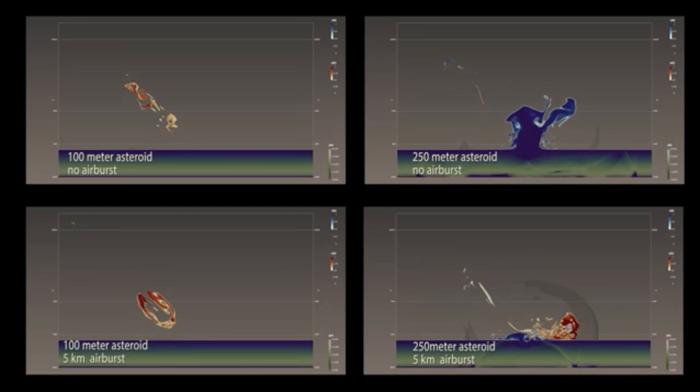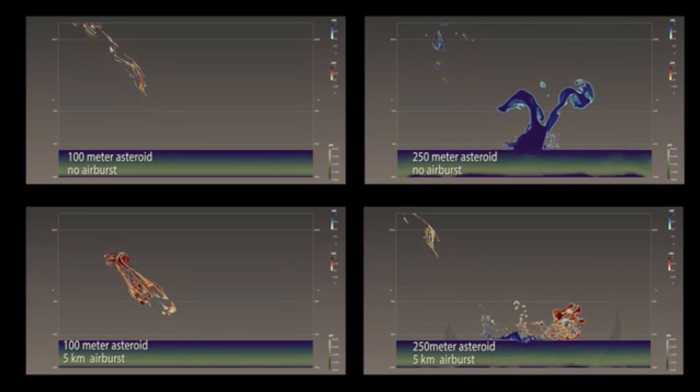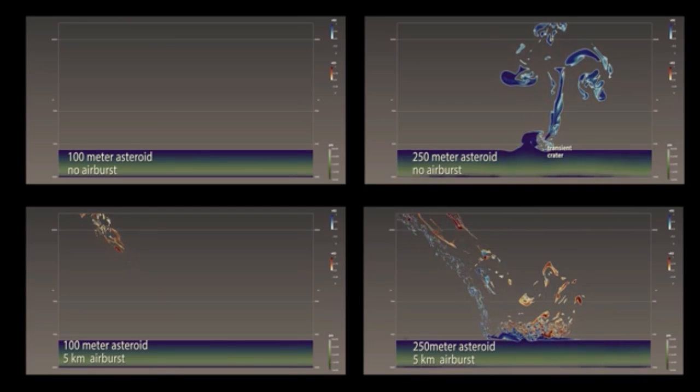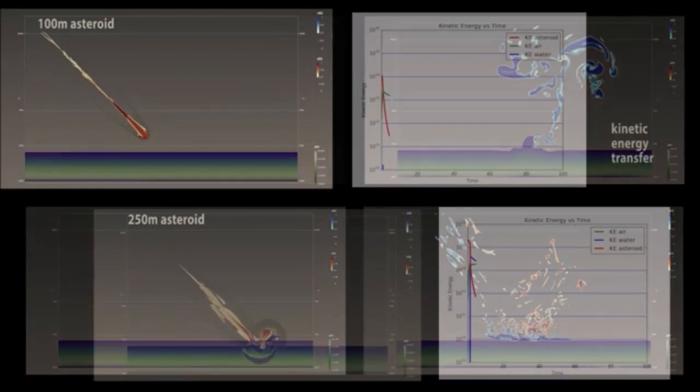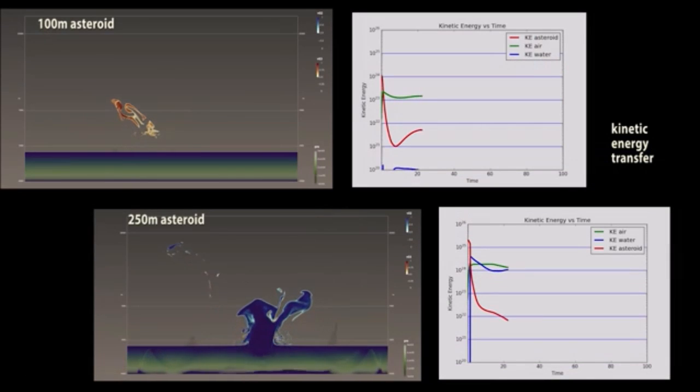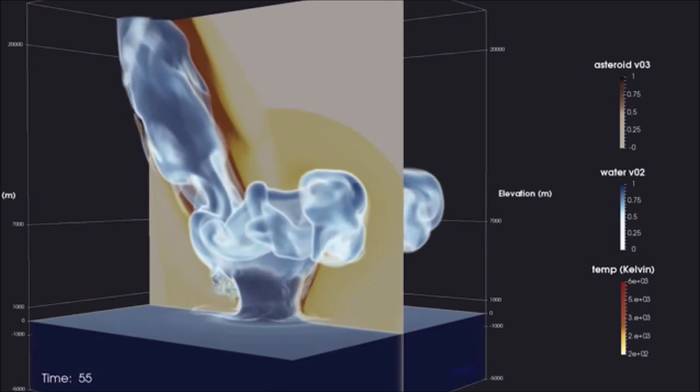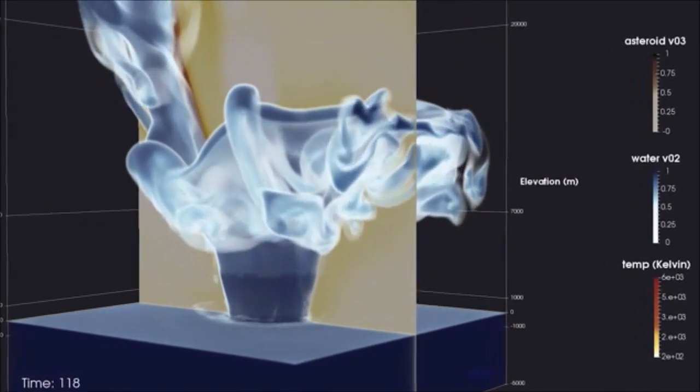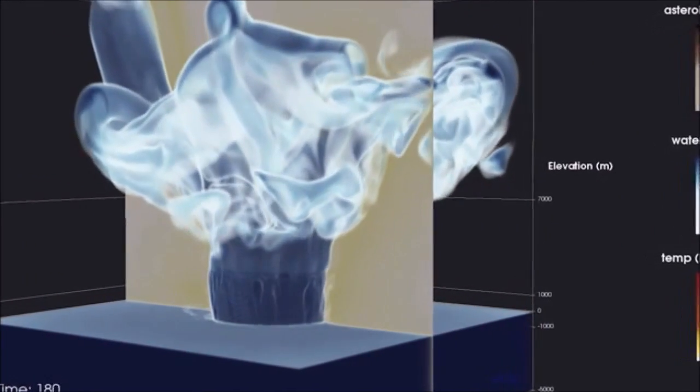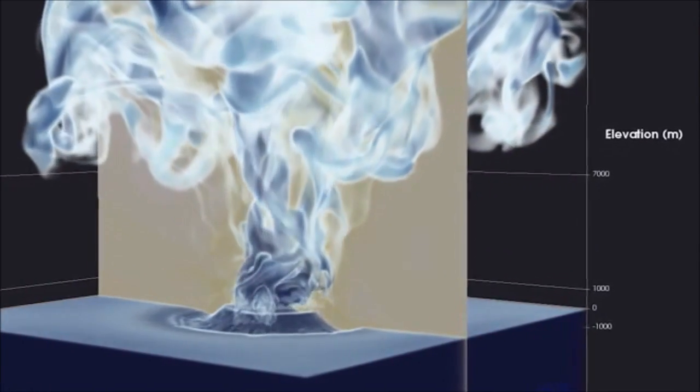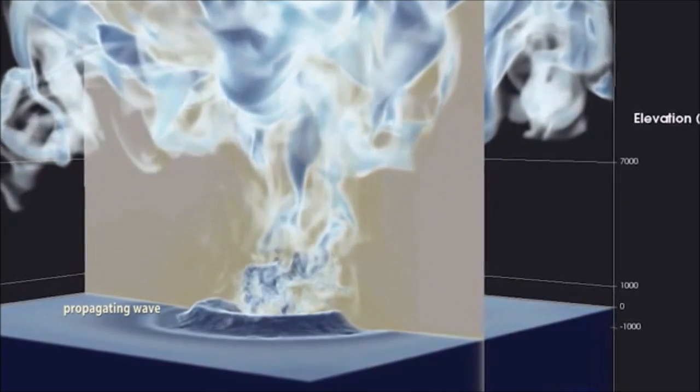Slicing through the dataset reveals more detail. The largest impact simulation shows development of a transient crater and a large plume of water and water vapor. Here we see two cases of varying asteroid size, on the right a plot showing the transfer of kinetic energy from the asteroid to the water and air. Pressure waves in both the air and water show differences in the transfer of kinetic energy. Colliding shock waves in the atmosphere and water, as well as the wind at the water's surface, hinder the creation of a propagating wave.